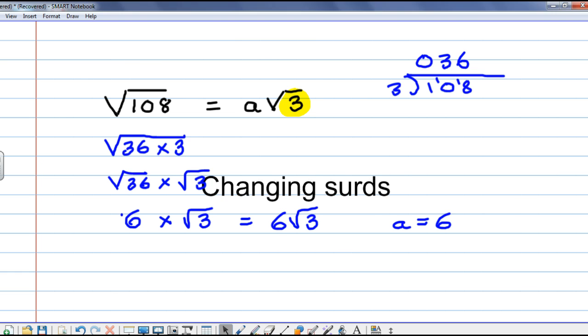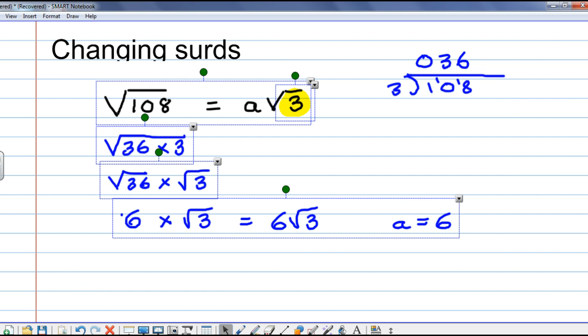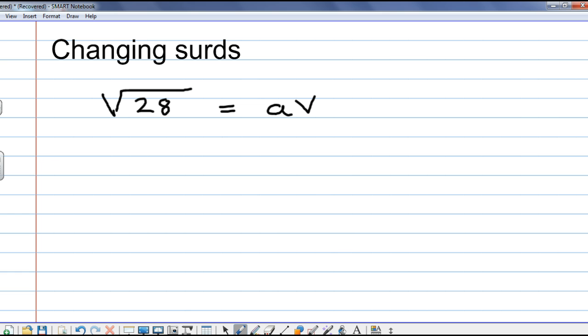Now, the harder examples are where they don't tell you what root is. So, here, let's have root 28. That's got to be written in the form of a root b. Now, what we do here is, we have to think of, what is the highest or largest square number?